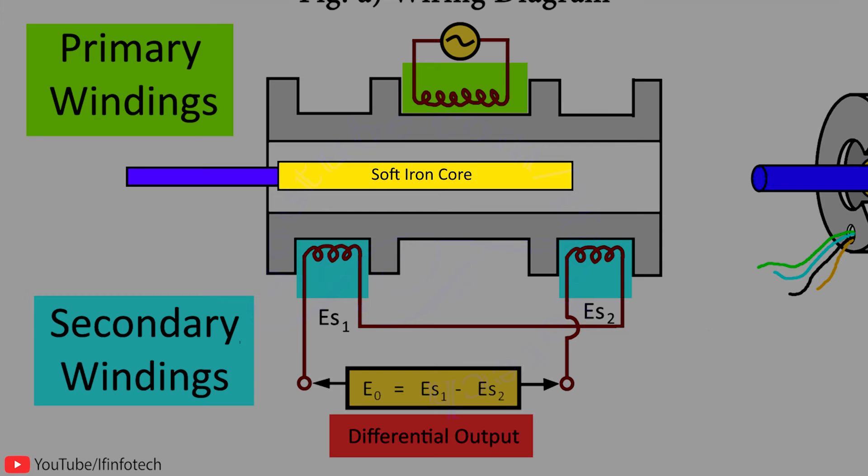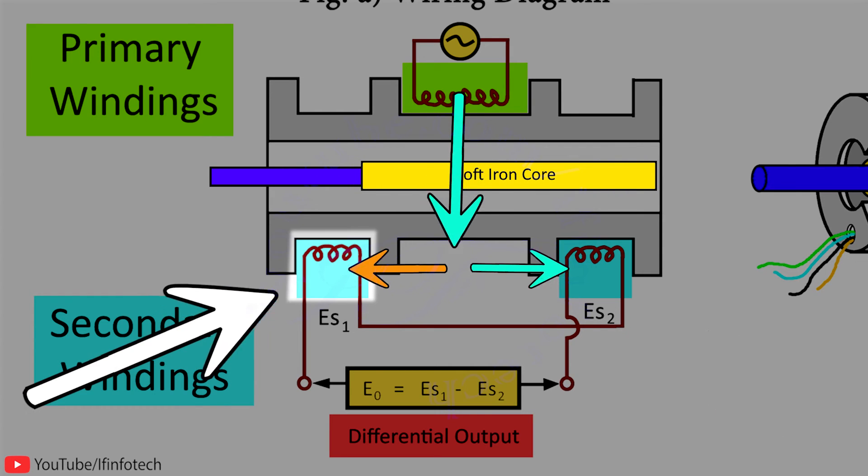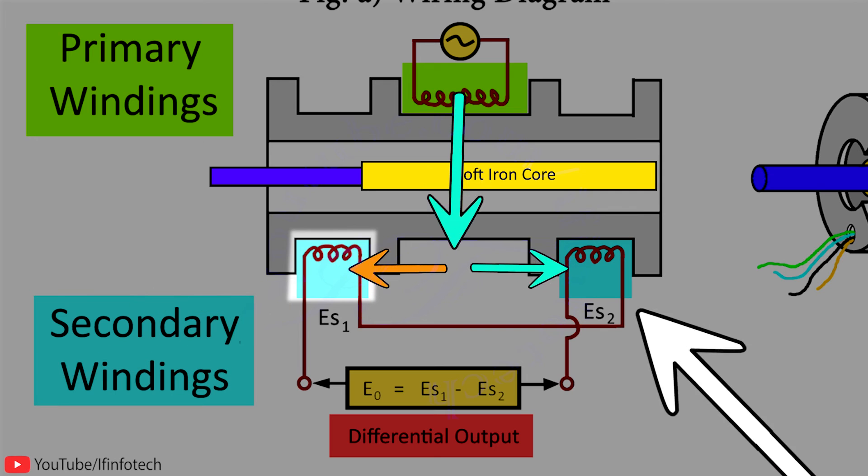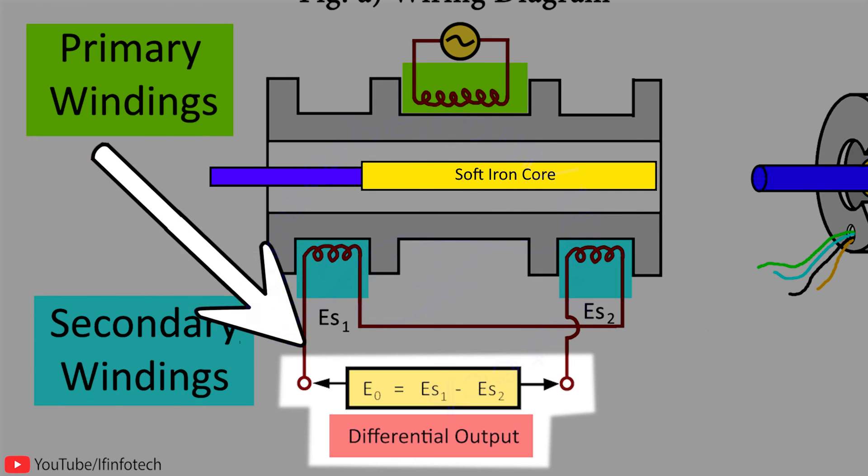When the core is moved towards the right side, then flux linking to coil S2 is more as compared to coil S1, that is, EMF induced in S2 is greater than EMF in S1. Hence, differential output measured between secondary terminals is out of phase with primary voltage.